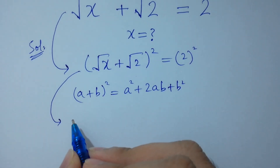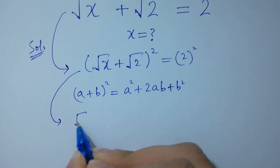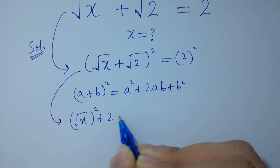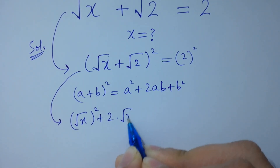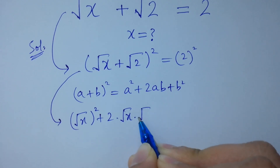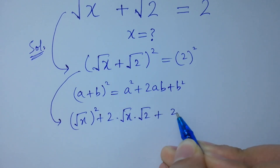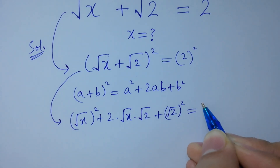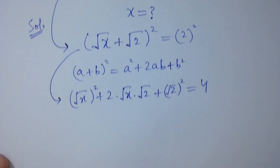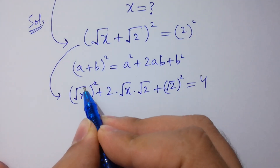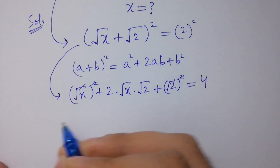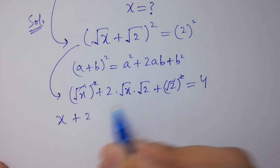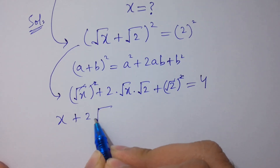It will be square root of x squared plus 2 times square root of x times square root of 2 plus square root of 2 squared equals 2 times 2, which is 4. The square cancels from square root of x.